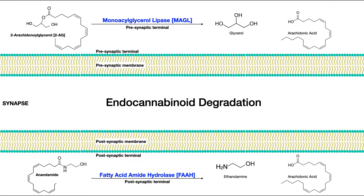Here's a more in-depth look at that degradation. This is the same synapse as before. Up here we have the presynaptic cell and its membrane. Down here is the postsynaptic cell and its membrane. We said that 2-arachidonoylglycerol, 2-AG, was taken up into the presynaptic cell — diffusing passively across the membrane, not requiring a protein for diffusion. Here you have the enzyme monoacylglycerol lipase.